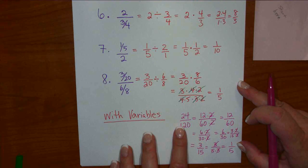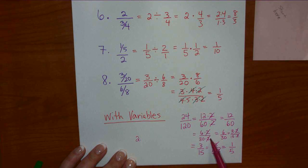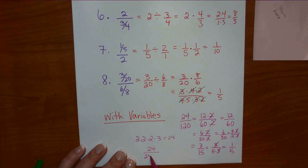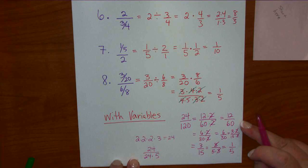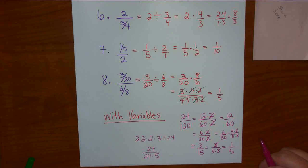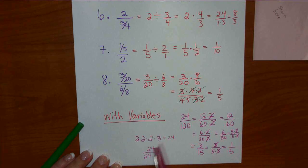So what did I cancel? A 2, another 2, a third 2, and a 3 — that's 8 times 3 which is 24. So 24 over 120: 24 also went into the bottom 5 times. The 24 cancels and you have 1 fifth. We probably wouldn't have known that 24 is a factor of 120 without a calculator. Any combination works: 4 and 6 cancel, or 8 and 3, or 2 and 12 — they're all valid factor pairs.